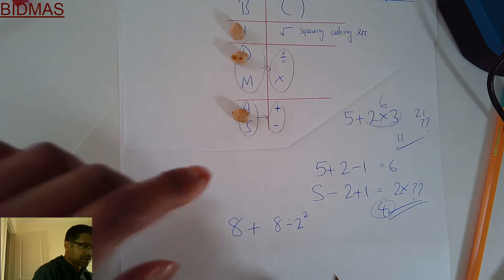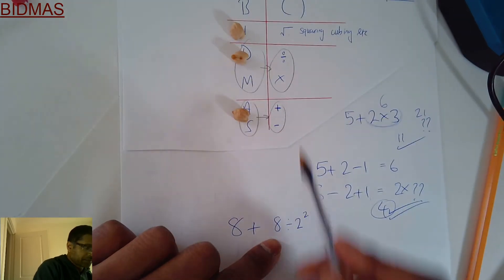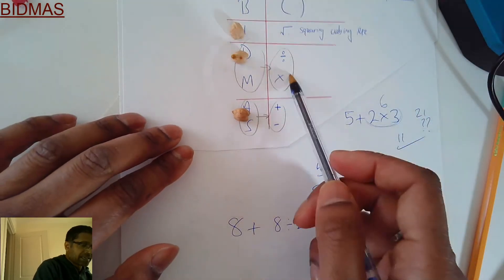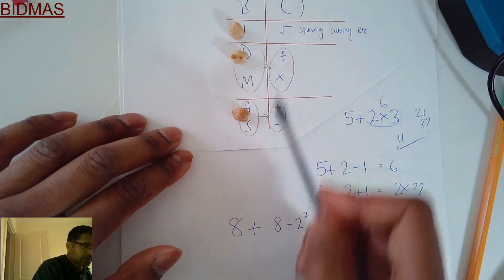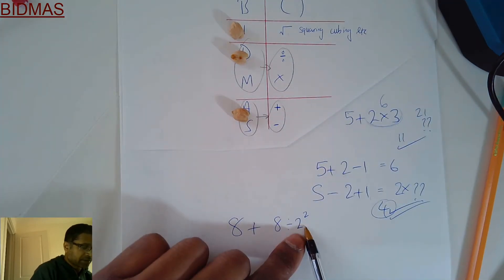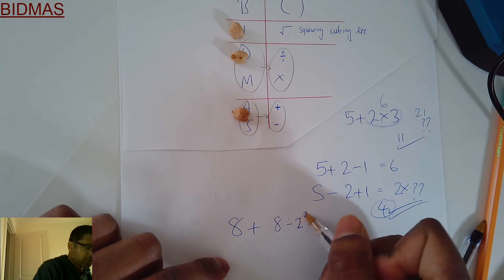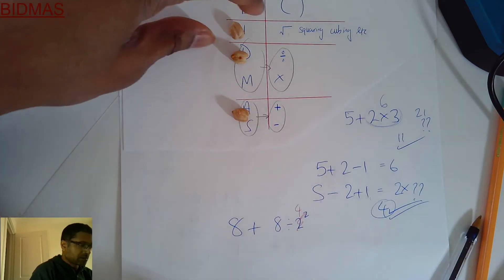Right, so what have we got there? I've got indices, I've got division, and I've got the adding there, and they're all in separate leagues. So we do indices first. 2²: 2×2=4. That becomes 4.